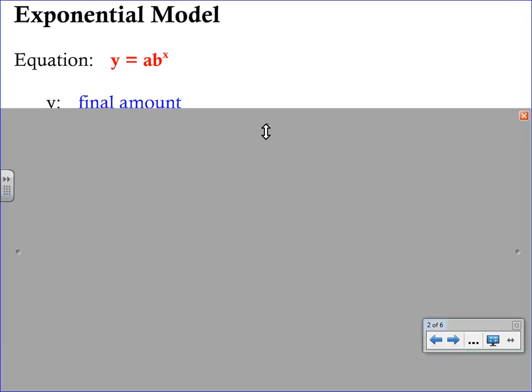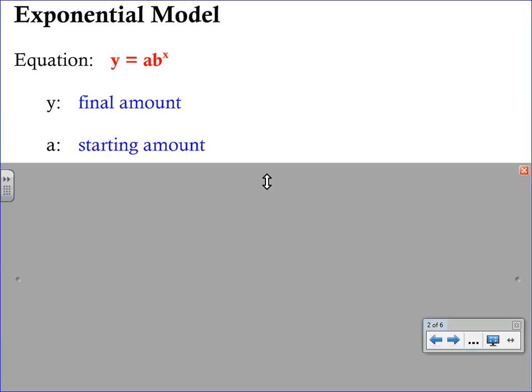Let's look at the different variables in this equation and talk about what they mean. Starting with y, y is going to represent the final amount. When you plug things into the equation, y will give you what you're looking for. A will be the starting amount, sometimes called the initial amount, the original amount. It could be an original population or just a given number at the beginning of time.